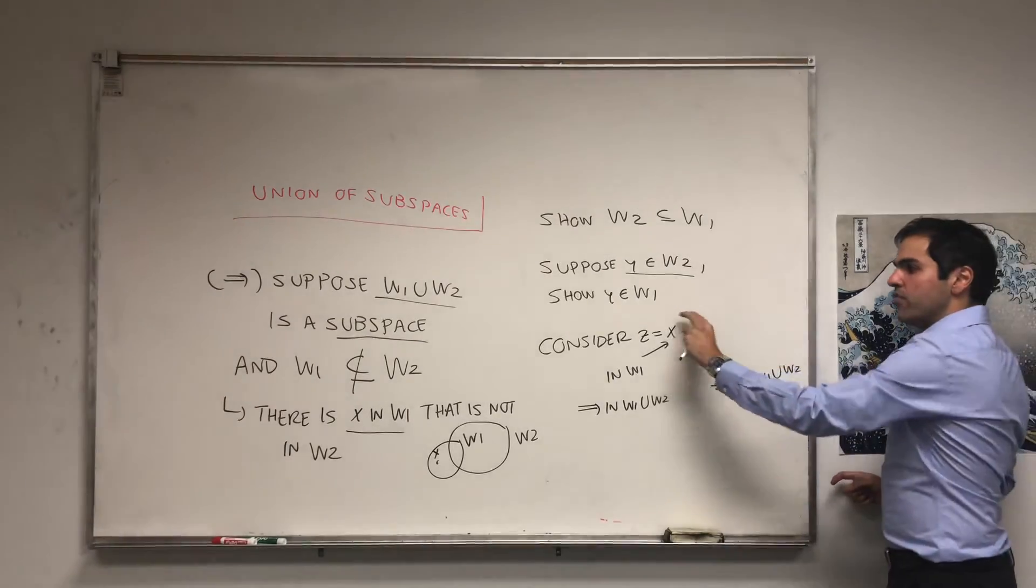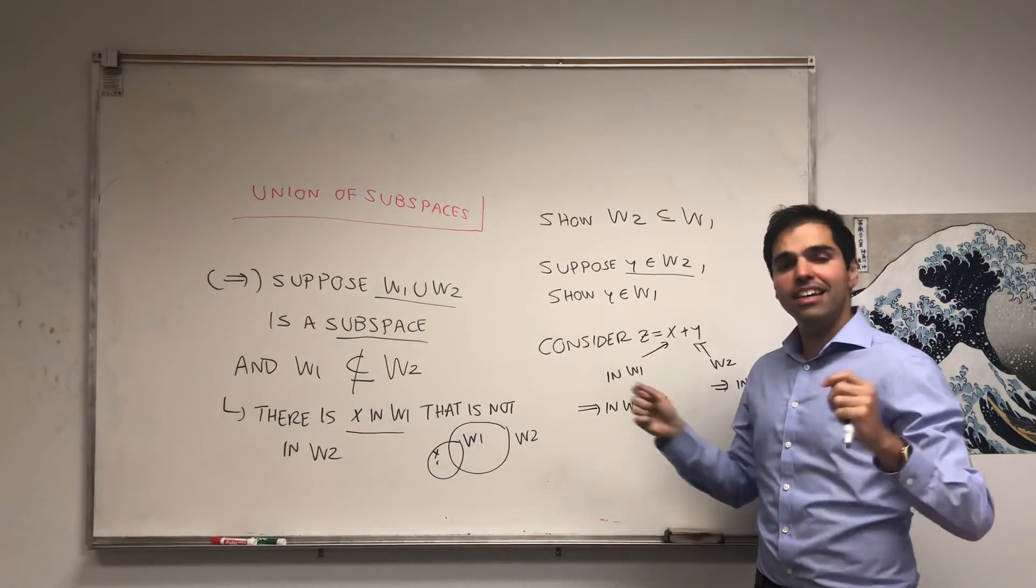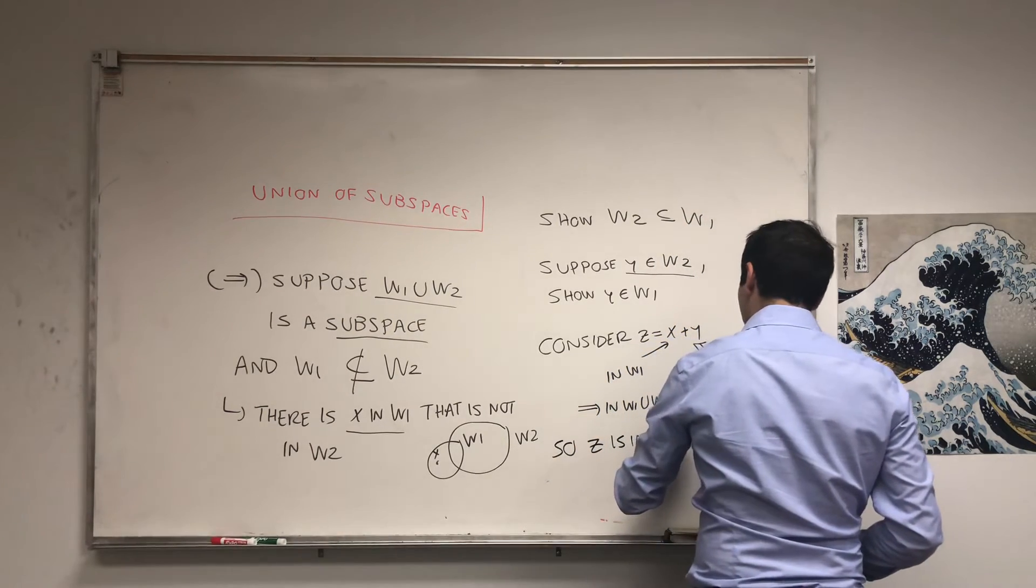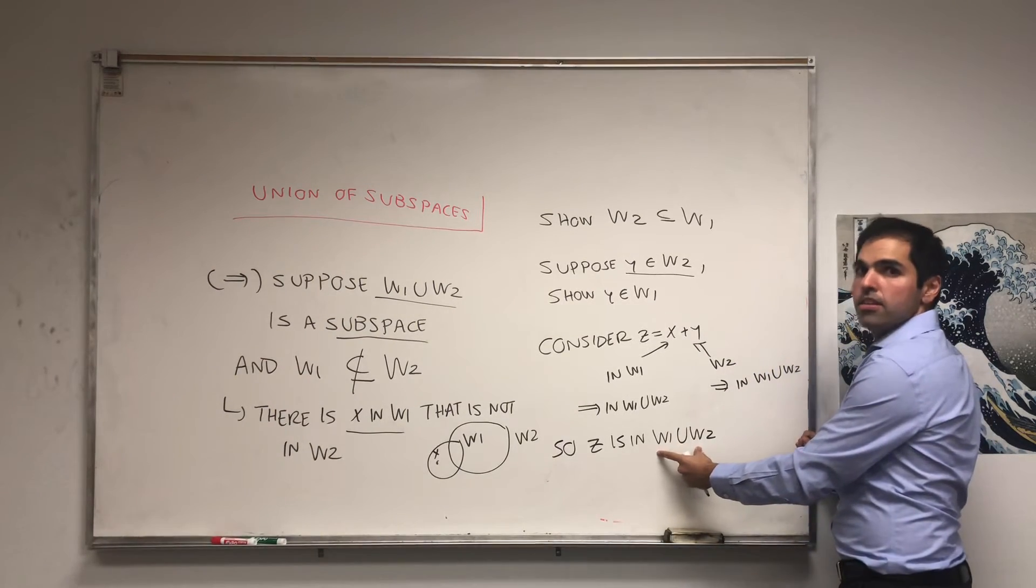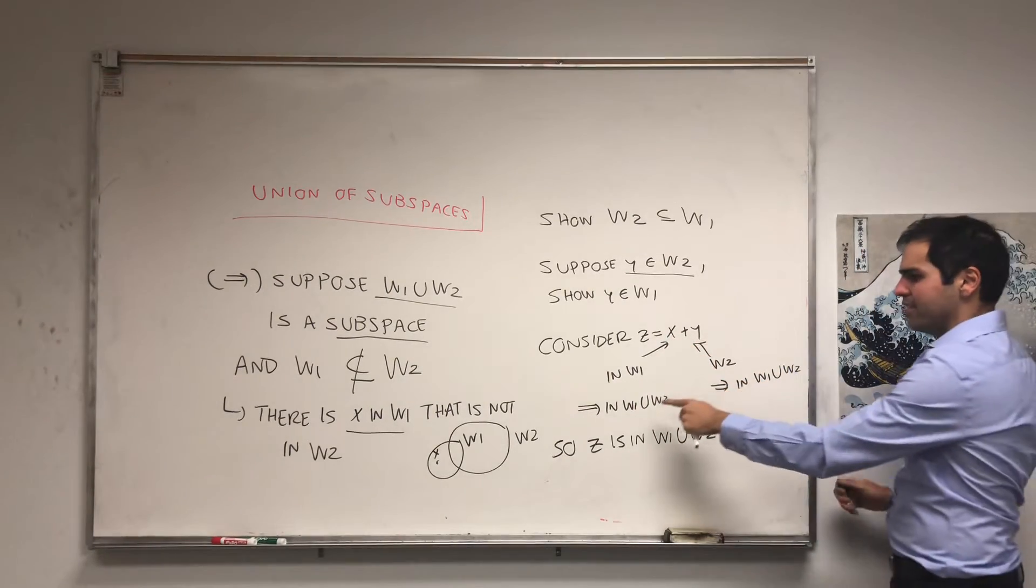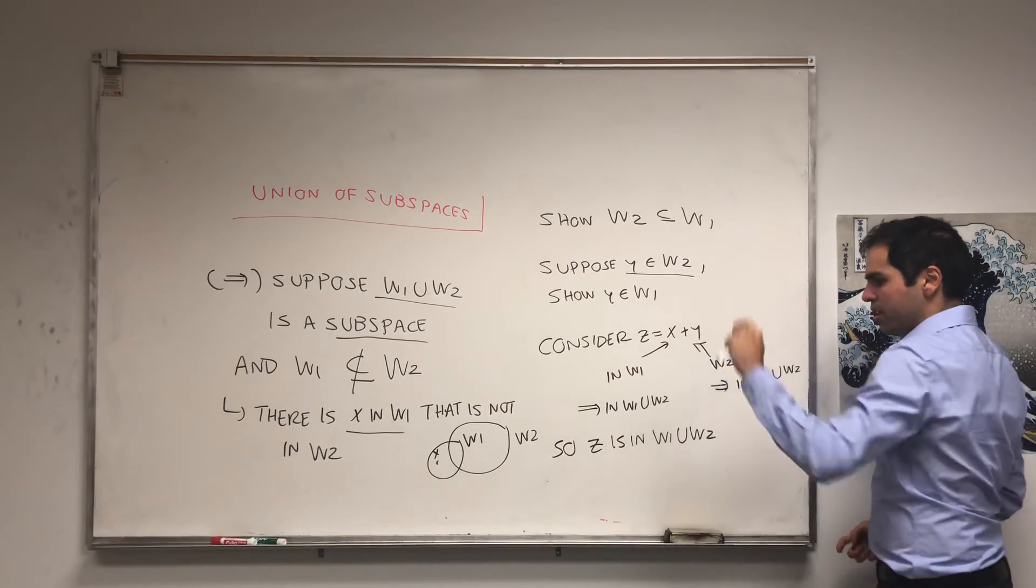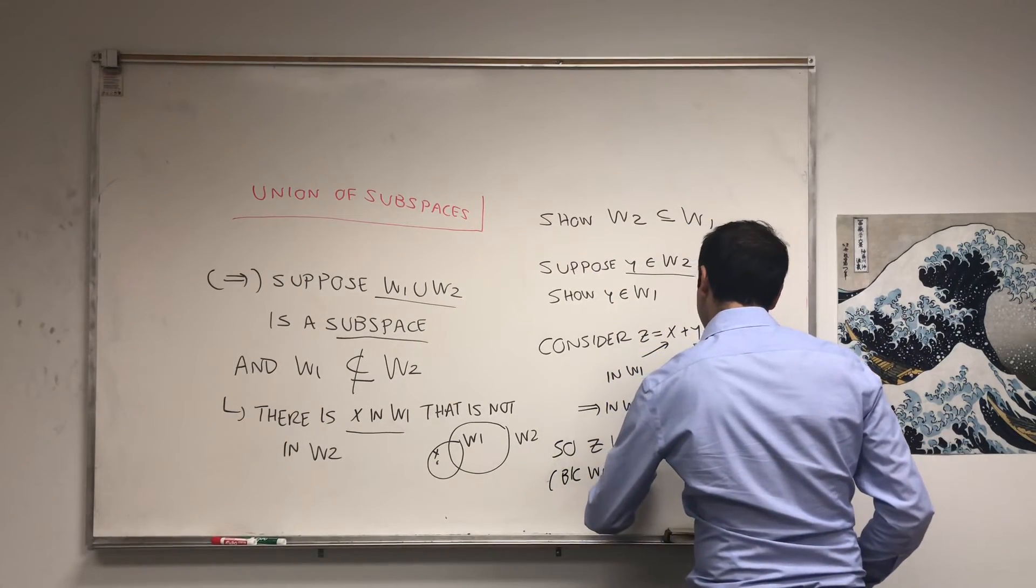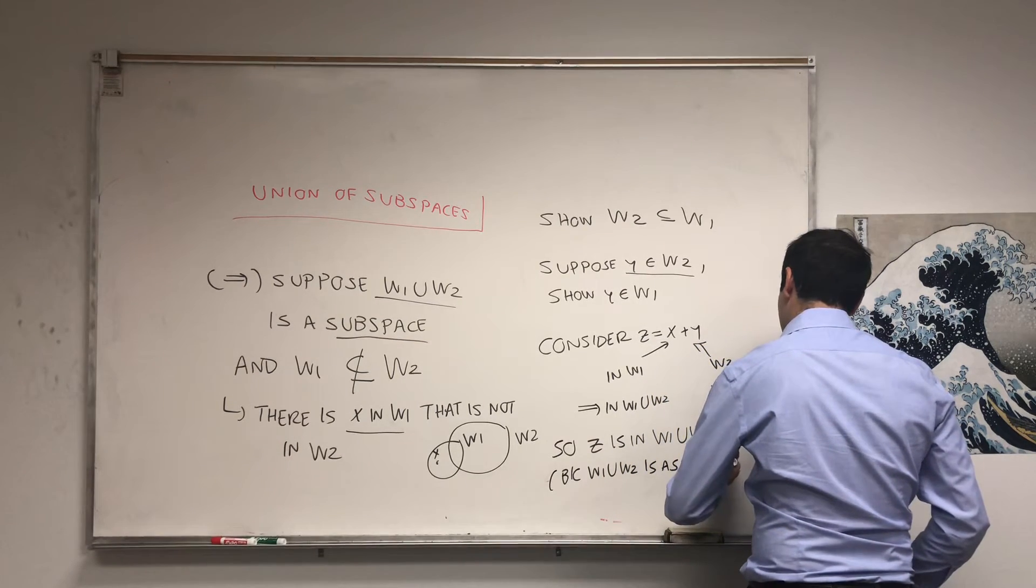Therefore, because we have two elements in that subspace, if we add them, it's still in the subspace. So, z is in W1 union W2. Again, because this is a subspace. So, closed under addition. And we have two elements in the subspace. So, x is in W1 union W2. Y is in W1 union W2. So, their sum is in it. So, because W1 union W2 is a subspace.